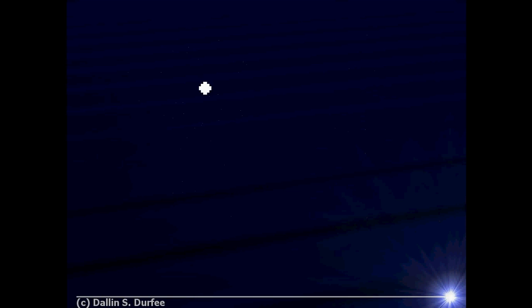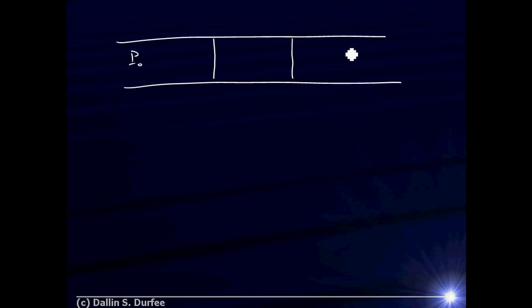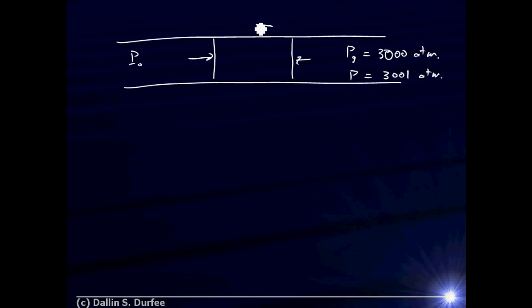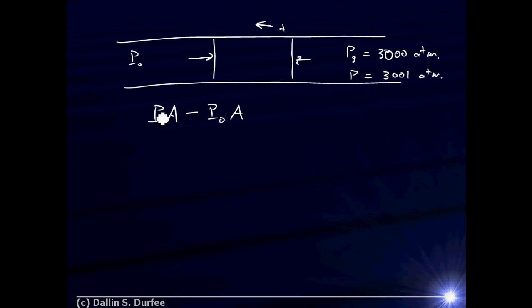Let's work the simplified problem where my bullet looks like a cylindrical slug. The pressure on the front side is atmospheric pressure. The problem said we had a gauge pressure of 3,000 atmospheres on the back side — that means the absolute pressure over there is 3,001 atmospheres. So to find the net force due to pressure, I take the force on each side and add them together. The force in the positive direction is 3,001 atmospheres times area; the force pushing the other way is 1 atmosphere times the same area.